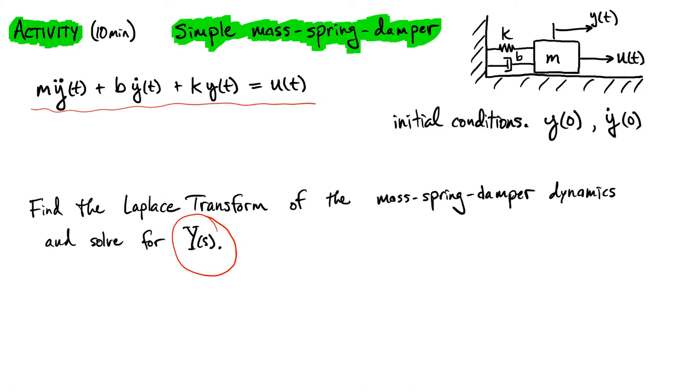Remember that you've got three different things that are causing motion: the two initial conditions, the initial position and the initial velocity, and then you also have a possibly forcing function u of t that's being applied.